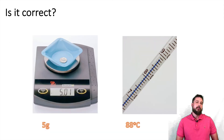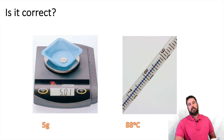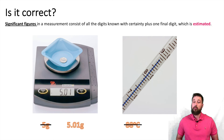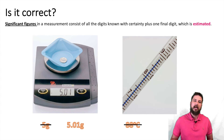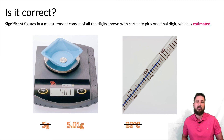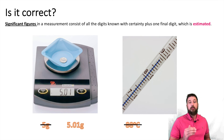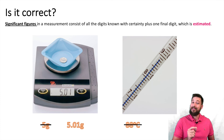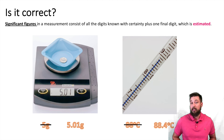Looking at the scale reading 5.01 grams — is it correct to say it's 5 grams? No, you have to say it's 5.01 grams because the scale measures to the hundredths place, and that precision is significant. Some scales measure to the thousandths place, and if so, we record that digit too. Now look at the thermometer — is 88 correct? No, because the thermometer counts by ones, we can see it's for sure 88 and not 89. Then we estimate the last digit — we can say it's 88.4, or maybe 88.3.